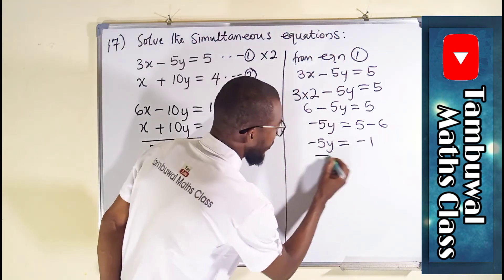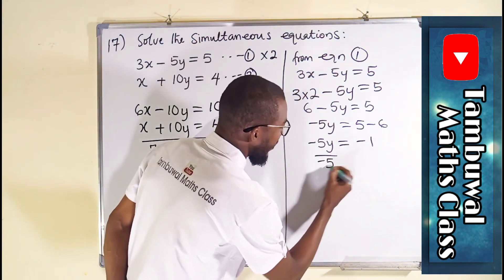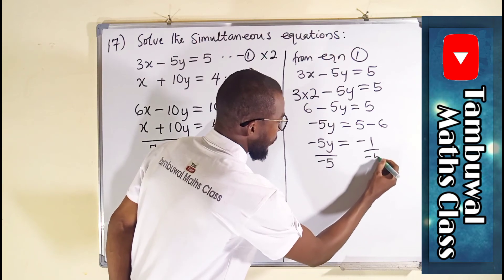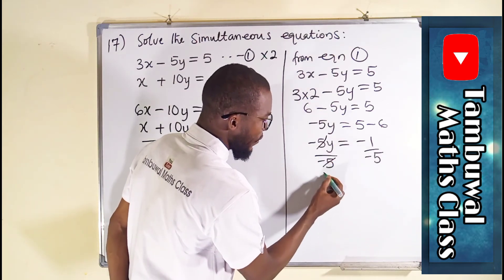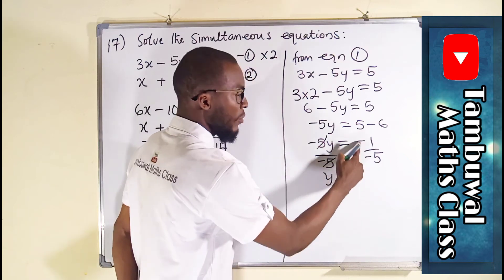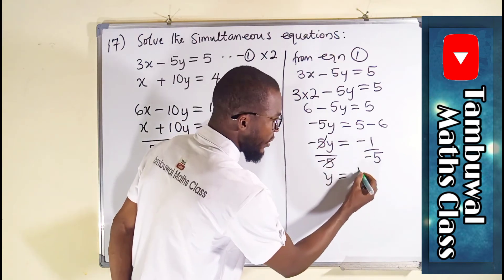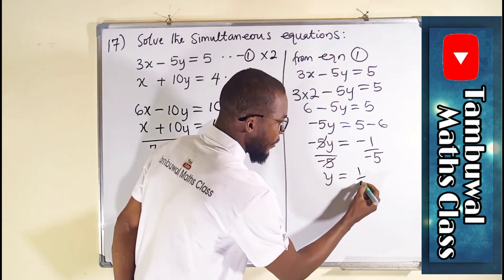But what we are looking for is y. So we have to divide both sides by this minus 5. Minus 5 cancels minus 5y. Minus will cancel minus, leaving only 1 over 5.